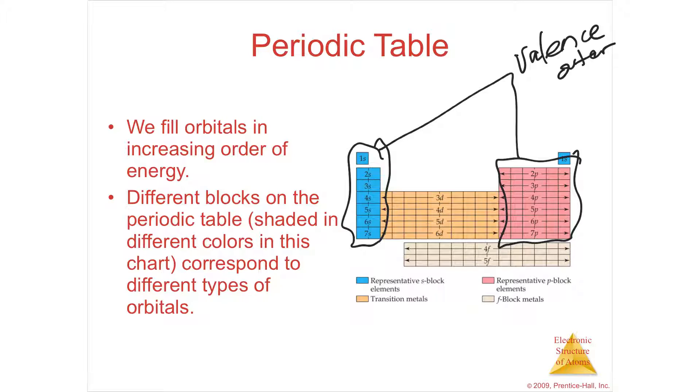Once you get to 4s, it's interesting because we filled 3p, but we don't fill 3d yet. You would think that you would fill all the threes before you would go to the fours, but it happens to be that 4s has a lower energy than 3d. So after you've finished 3p, which is 3p6, you go to 4s1, 4s2, and once that 4s is filled, the very next possibility is 3d.